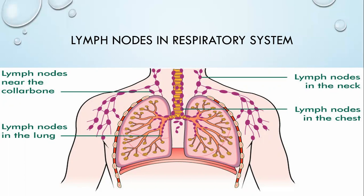Lymph node examination is very important in the respiratory system because looking at the lymph nodes can point towards tuberculosis or malignancy. Every lung drains through to the cervical lymph nodes. We have to do cervical lymph node examination, scalene lymph node examination — the scalene lymph node is beneath the sternocleidomastoid muscle, so we must relax the muscle and feel for the scalene node — and also look for the supraclavicular lymph nodes. These three groups of lymph nodes are specifically associated with the respiratory system.